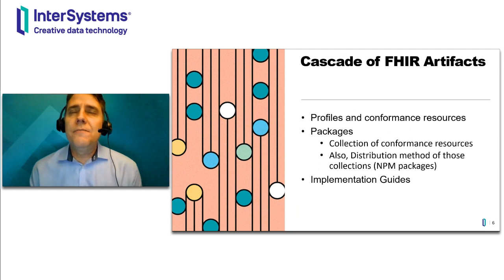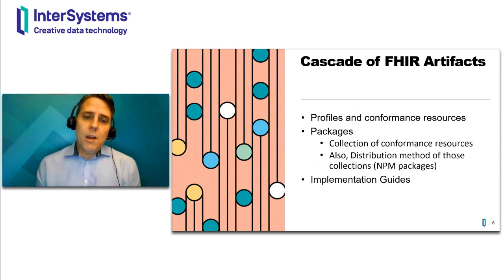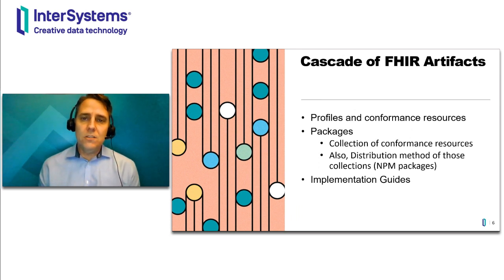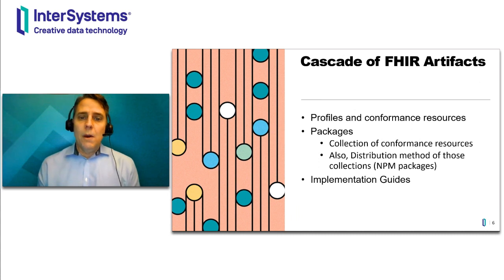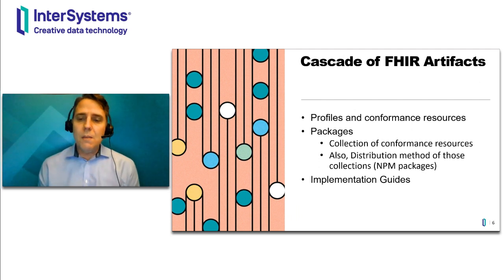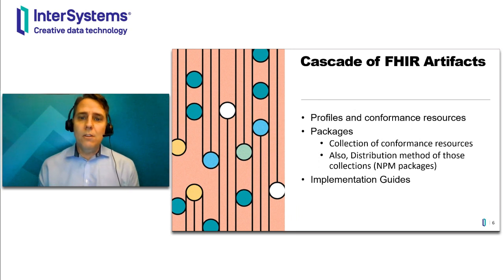A little bit about how FHIR concepts relate to one another. A coherent collection of conformance resources is called a package. You might hear it called a metadata package because it contains conformance resources, which are metadata, or a profile package because the package contains profiles. According to the specification, these collections of conformance resources for an implementation are a package. The distribution method of these collections are also called packages — NPM-like packages. There's a FHIR package registry where you can download these packages, collections of conformance resources, as NPM packages.